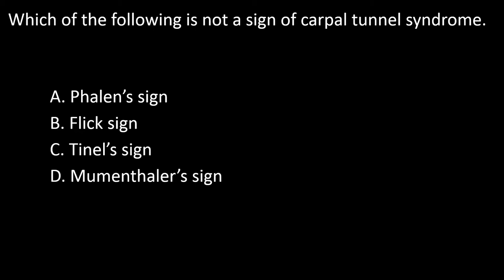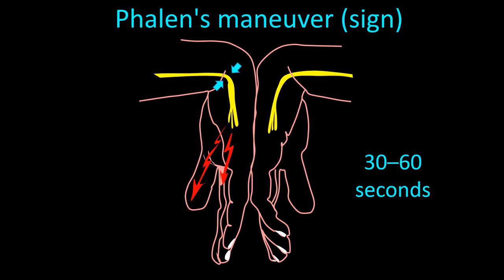Next question: which of the following is not a sign of carpal tunnel syndrome? A: Phalen sign, B: flick sign, C: Tinel sign, D: Mounehtaler sign. The Phalen maneuver is illustrated in this frame — both hands are flexed against each other. This is usually held for thirty to sixty seconds. If tingling sensation appears in the appropriate region of the hand, the test is positive. Some people keep the deflection up to about two minutes. If no tingling sensation occurs in the appropriate area, the test is called negative and there is no Phalen sign. The cause of tingling during this maneuver is increased pressure in the carpal tunnel and pinching of the median nerve between the proximal edge of the transverse carpal ligament and the anterior border of the distal end of the radius.